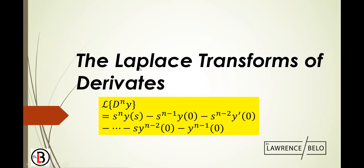Let's go to the second of our two-part lecture. This one is the Laplace Transforms of Derivatives. The Laplace of the nth order derivative of y is simply the nth power of s times the function y(s), minus the n minus 1 power of s times y(0). You'll notice that the power of s decreases, but the power of y(0) — the order — increases, from y(0) to the first derivative, to the second derivative, and so on, until it ends at the n minus 1 derivative.